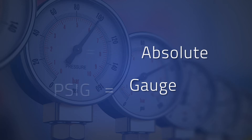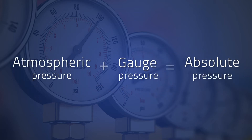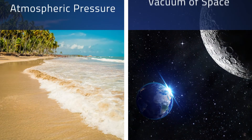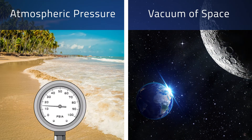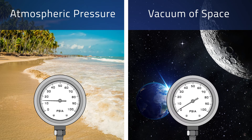Absolute pressure is the total amount of pressure of a given environment, including the atmospheric pressure. On planet Earth, the standard naturally occurring pressure is 14.7 PSI at sea level, and nowhere, except in outer space, will atmospheric pressure ever reach zero.